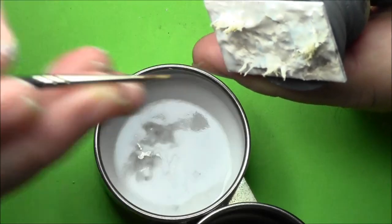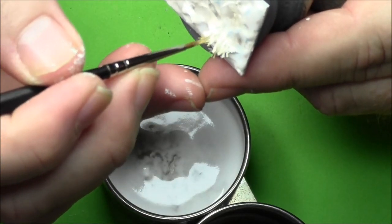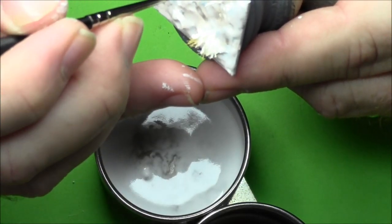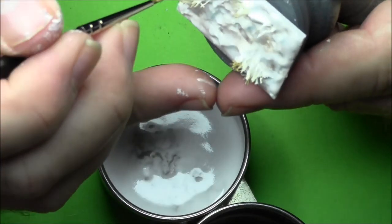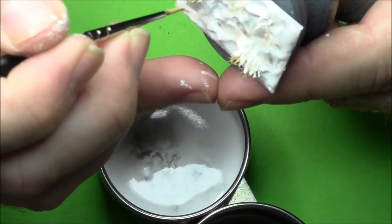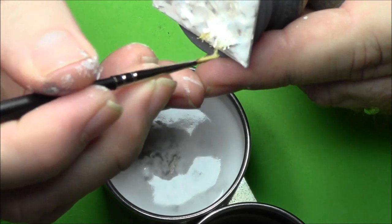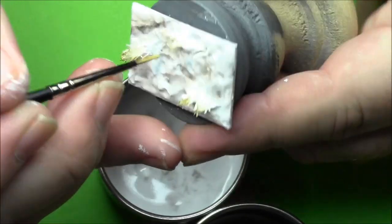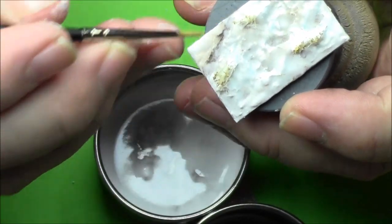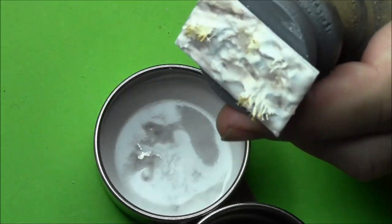Then you want to take that yellow paint there, the golden yellow, and just hit the hairs where they're still just the natural hair, the natural straw-colored hair. Go ahead and paint those up. Just to make them stand out a little more, give it a little more color.